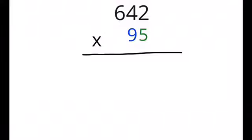How to do long multiplication. So first, 5 times 2 is 10, so add your 0 and then your 1 here.